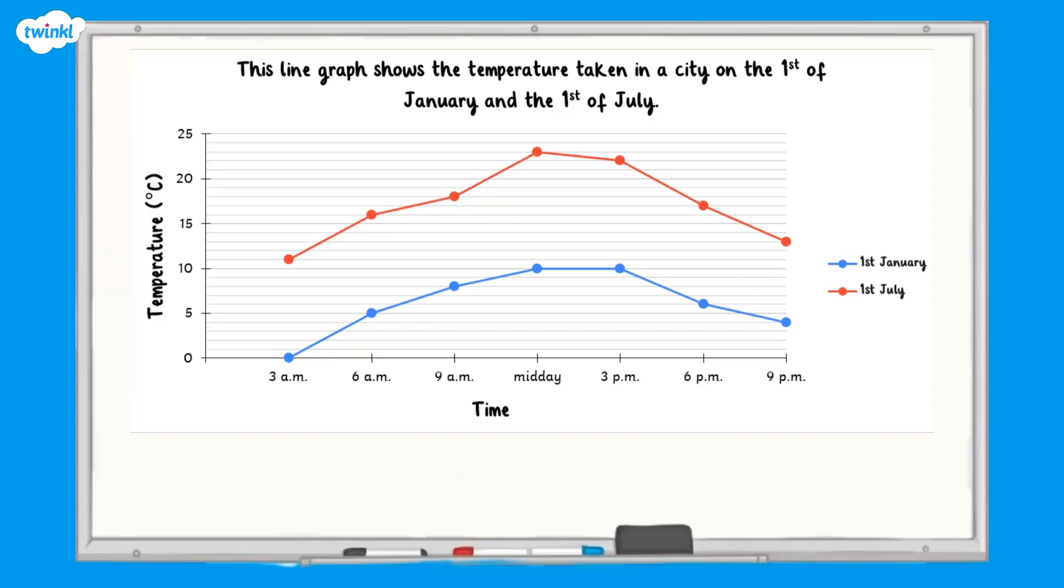This line graph shows us two sets of data. The key on the right tells us that the blue line represents the temperature on the 1st of January, and the red line represents the temperature on the 1st of July.